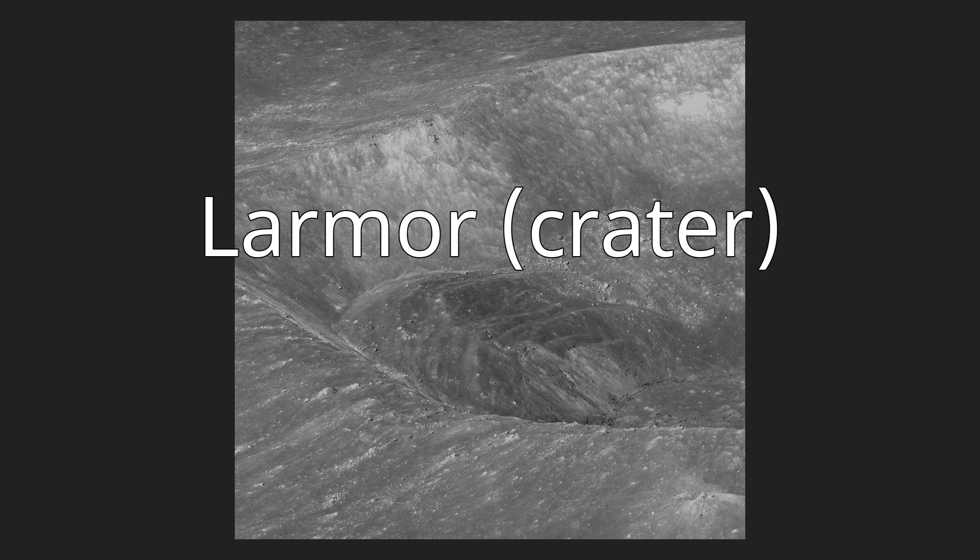The rim of Larmor is broken across by the satellite crater Larmor Z. The remaining rim is slightly worn, particularly to the southwest, and the inner wall is somewhat wider at the southern end. The wider southern inner wall displays terraced structures.